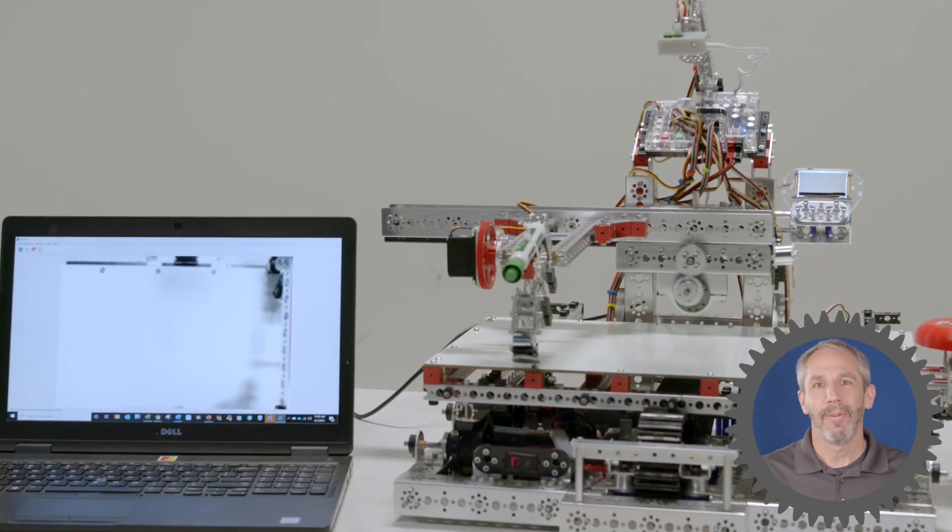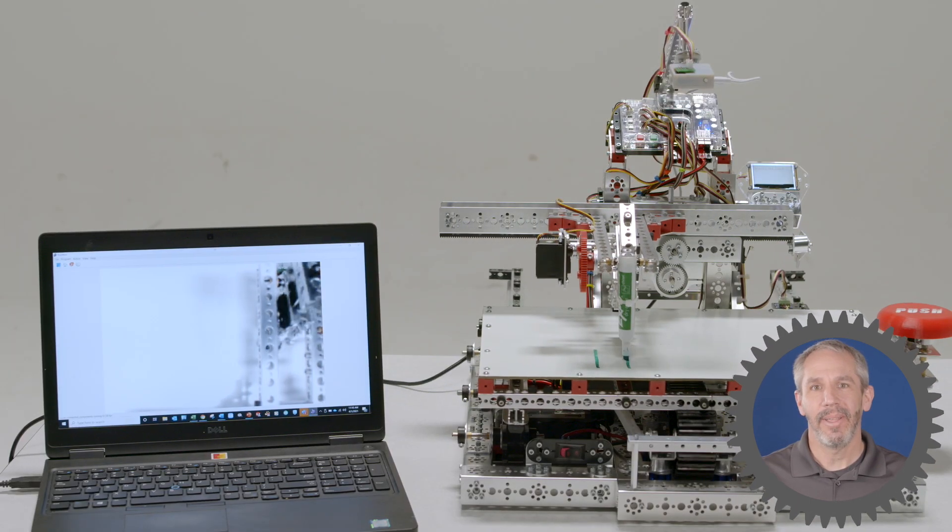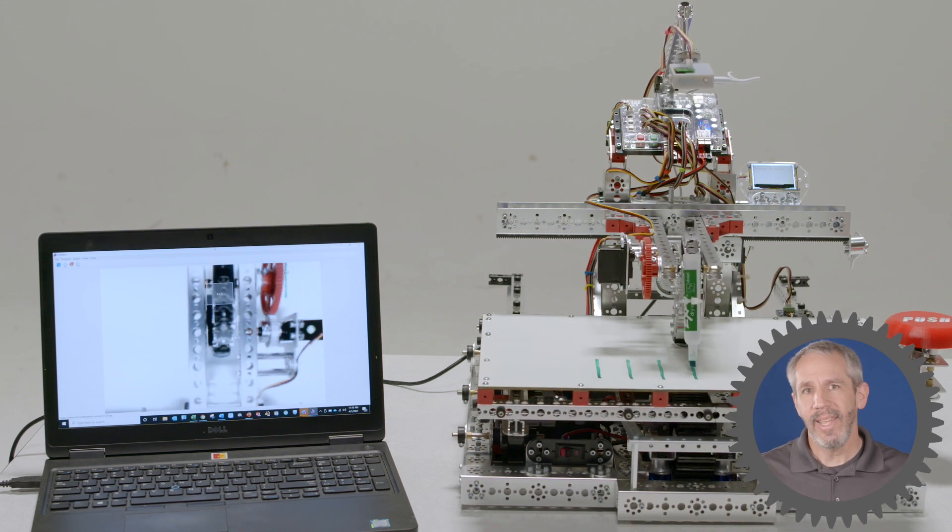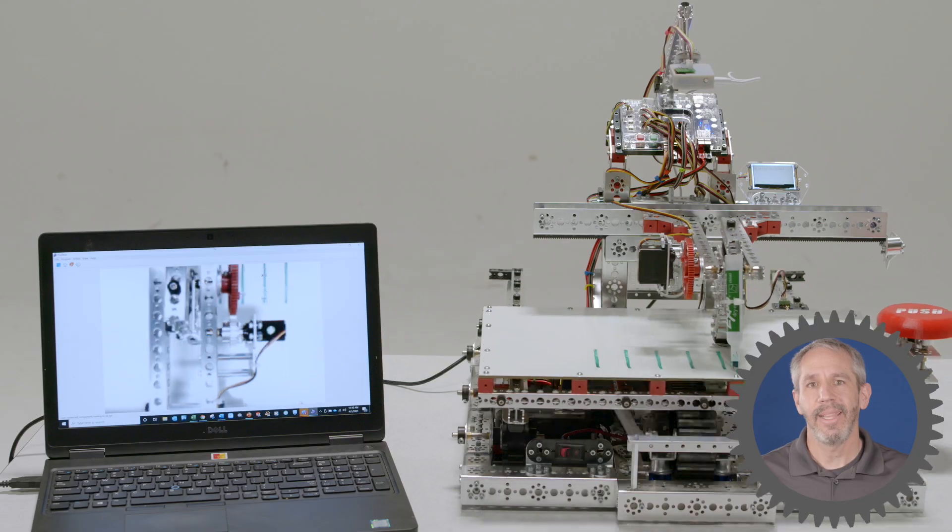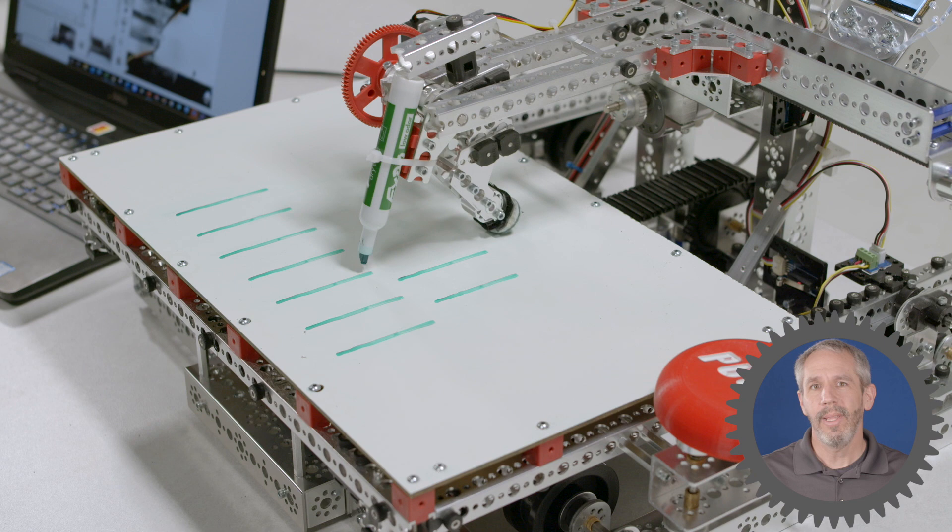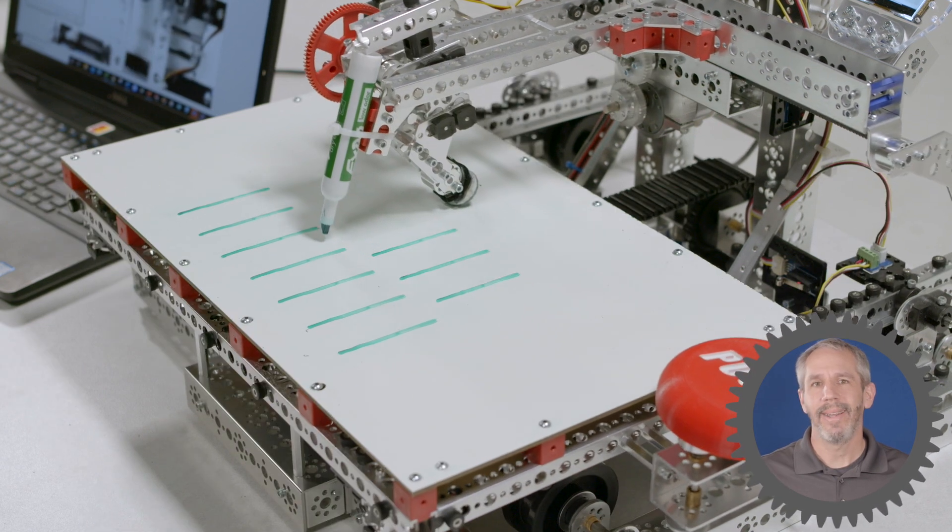Let's look at another robot example. This robot is a game-playing robot. After the robot draws the game board, then you take turns with the robot erasing lines, and whoever takes the last line loses. But you can only erase lines from one row at a time.